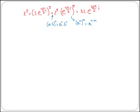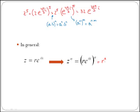In general, if you have a complex number in exponential form z equals r times e to the power of θi, then to calculate any power z to the n, you take r times e to the power of θi, everything to the power of n. Applying index properties, this equals r to the n — so the modulus gets raised to the power of n — multiplied by e to the power of θ times n times i.